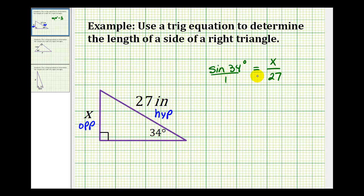Now that we have a proportion, we can cross multiply and solve for x. So 1 times x equals 27 times sine 34 degrees.